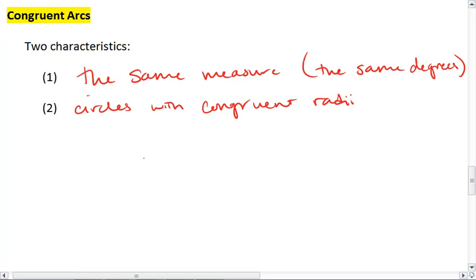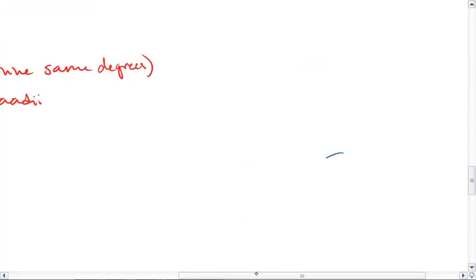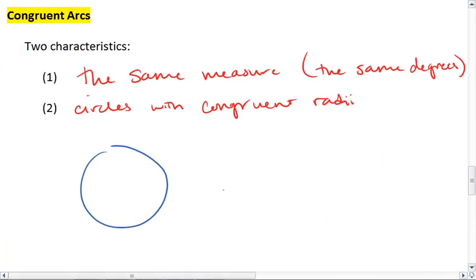Similarly, say I have a circle with the same radius. I know my circles aren't great. So we'll say we have the same radius. But if one has a different measure, so say this one's 30 degrees and this is 100 degrees, then obviously the arcs are not congruent.